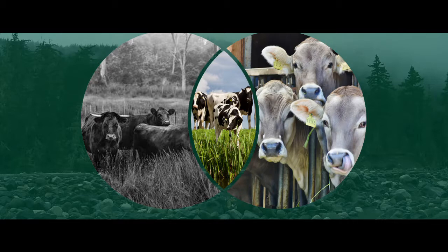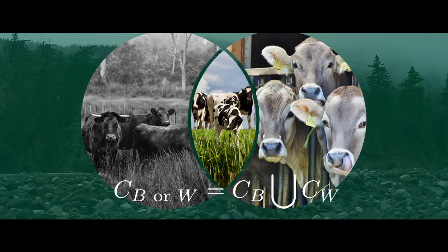And what about the set of all cows? Well, they were either black or white. We call that set of objects having either of the two properties the union of two sets. And we write: C of B or W = C sub B ∪ C sub W.